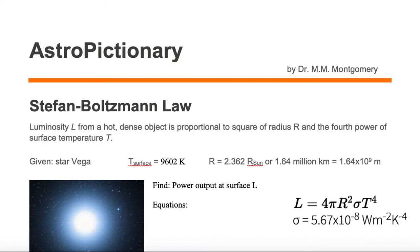In this video, we're going to go through the Stefan-Boltzmann law. Let's start by reviewing it: luminosity L from a hot, dense object is proportional to the square of radius R and the fourth power of surface temperature T.